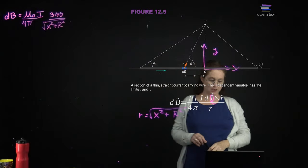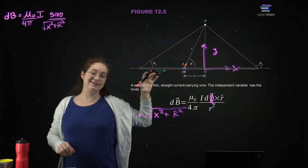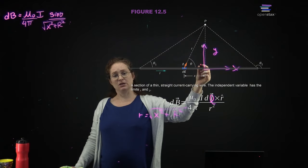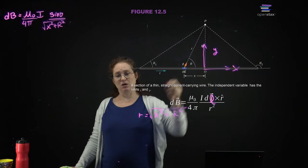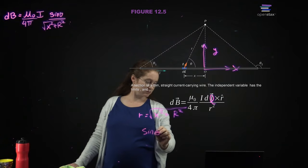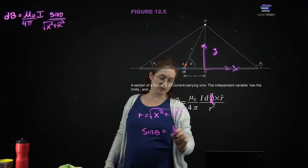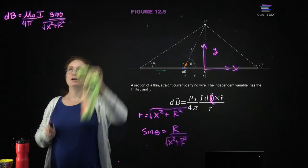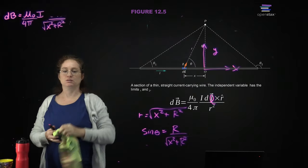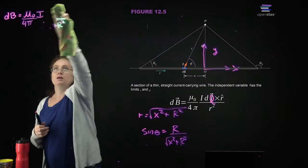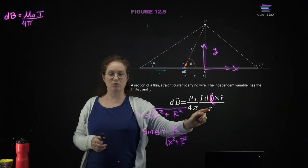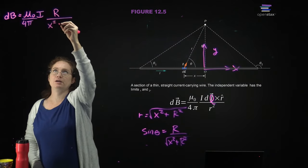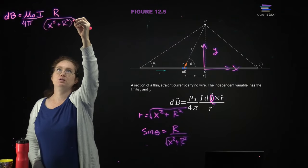Now I've mixed polar coordinates and Cartesian coordinates. I can write sine theta as R over the hypotenuse — it's always the opposite over the hypotenuse. So I'm going to delete that sine theta and replace it with R. I should have had R squared. So I have R squared times sine theta — I have R on the top, and then X-squared plus R-squared to the three-halves on the bottom.